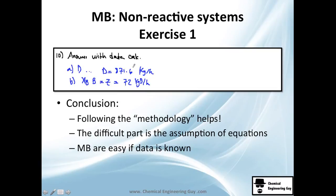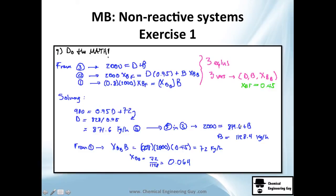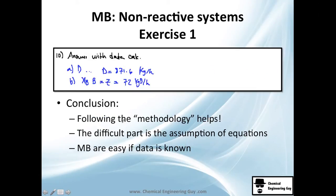We are asked for the distillate flow D, which we have as a direct variable. We are also asked for the benzene fraction in the bottoms, XBB, which we also calculated. We have both values. Conclusion: if you follow this method it really helps. The difficult part is the assumption of equations, variables, and data — how to relate them. Mass balances are easy once the data is known; the more data you have, the easier it becomes.